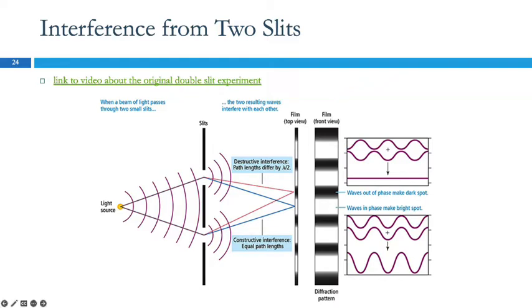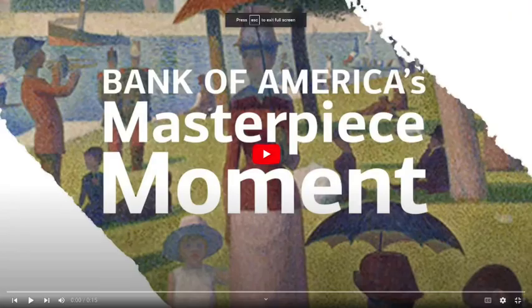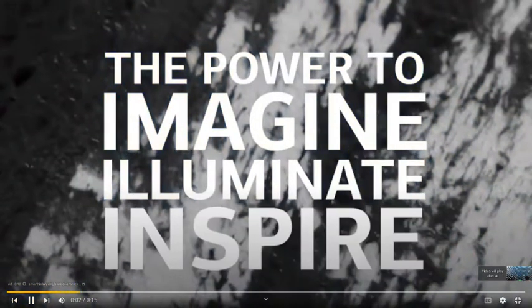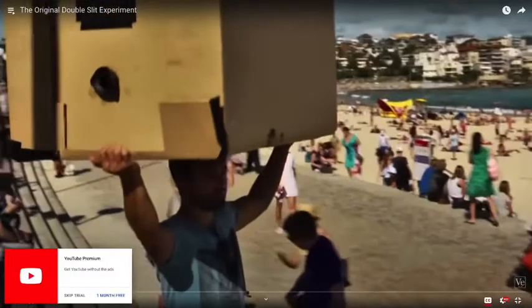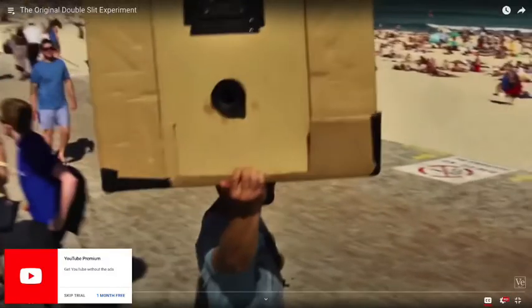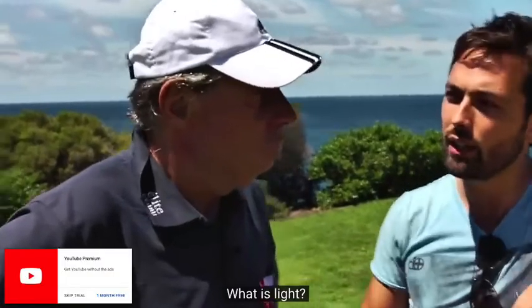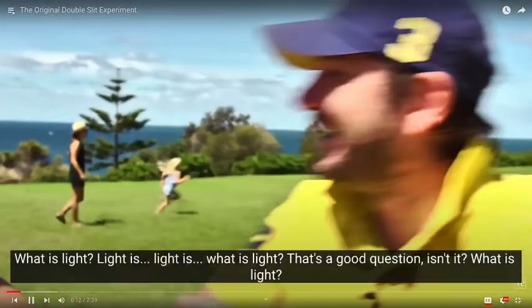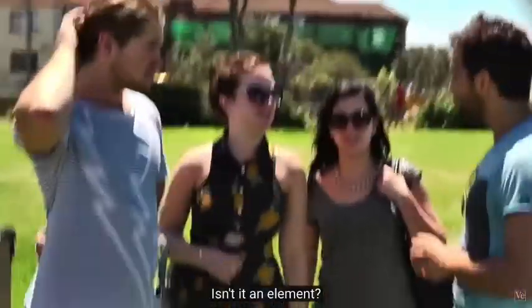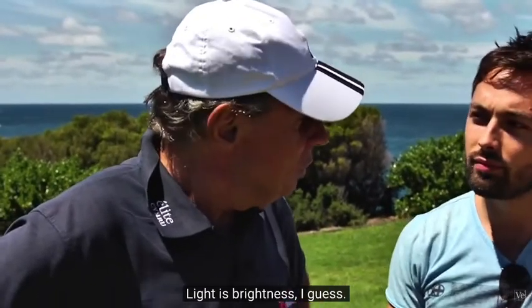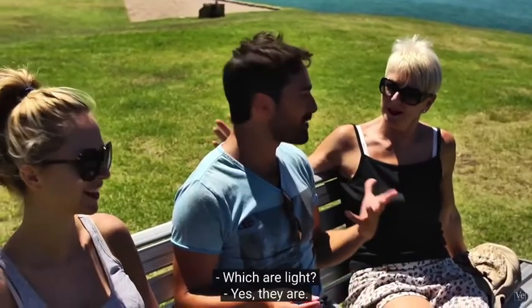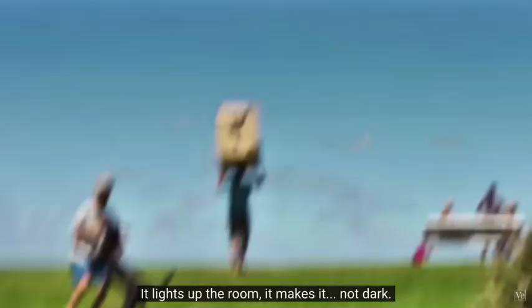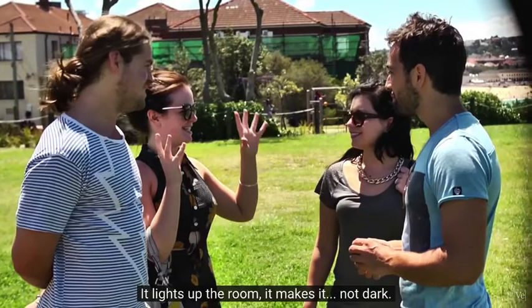Because that's just not really easy to understand, I have a video about that. It's actually one of my favorite teaching videos. What is light? What is light? What is light? That's a good question, isn't it? Isn't that an element? Light is brightness, I guess. We have auras. We all have auras, which are light. It lights up the room, it makes it not dark.